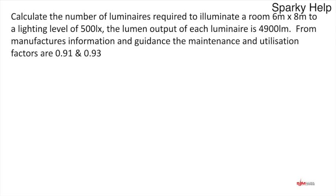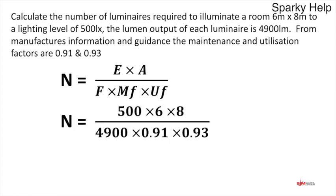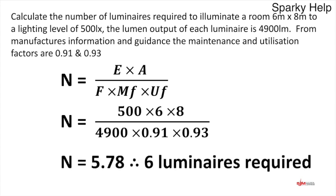Let's do a calculation. Calculate the number of luminaires required to illuminate a room 6 by 8 meters. We want 500 lux, each luminaire gives out 4900 lumens. Maintenance factor is 0.91, utilization factor is 0.93. Put this into the formula: 500 times 6 times 8, divided by 4900 times 0.91 times 0.93. That gives 5.78 luminaires. You can't buy 5.78, so round up to 6. Six luminaires is what you're going to install.